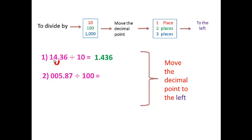Next: 5.87 divided by 100. Zeros on the left have no value — you can ignore them. Take the point and move back two steps, because there are two zeros in 100. First step, then second step. The point will set here. The answer is 0.0587.